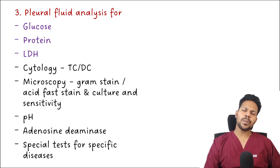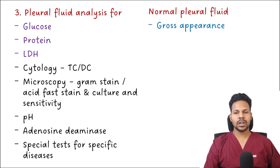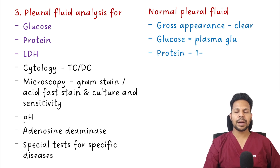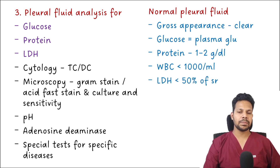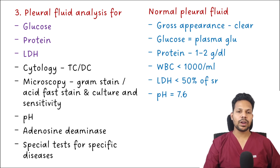Normal pleural fluid grossly appears clear. Glucose is equal to plasma glucose; protein is 1–2 g/dL; WBC is less than 1000 per mL; LDH is less than 50% of serum; and pH is 7.6.